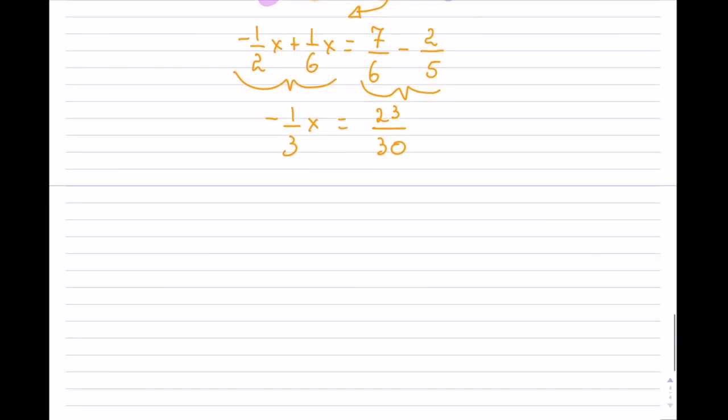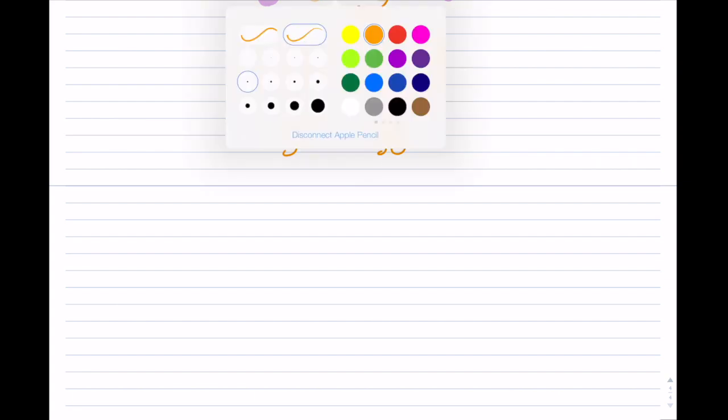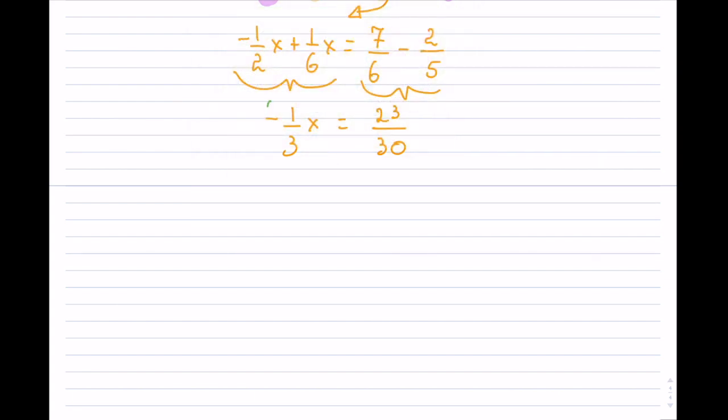So now I have this negative 1 over 3 on the left hand side which I do not want to have. So this right here I want to get rid of that. Now to get rid of that, well the negative 1 and the 3, so how I can get rid of it is I can multiply. For example, if I multiply by 3, well then the 3 will cancel here, and if I can divide by negative 1, the negative 1 will cancel there.